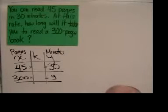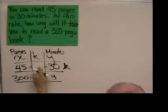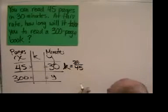Well 45 times what equals 30? Well that mystery value here, K, can be found by dividing 30 divided by 45.